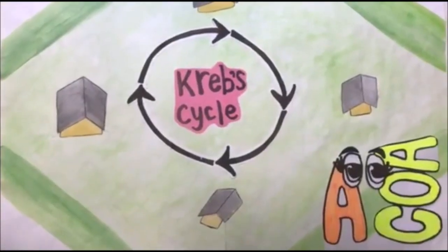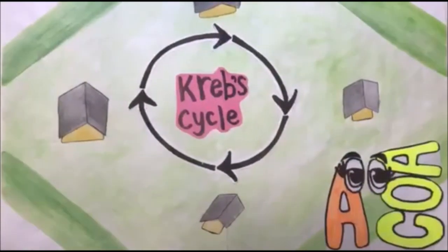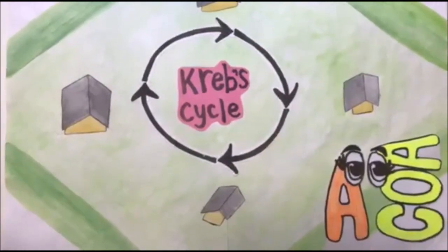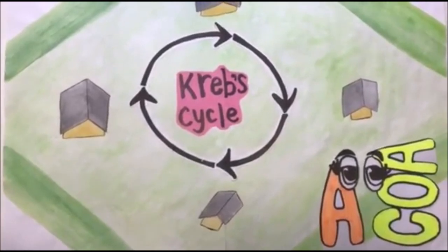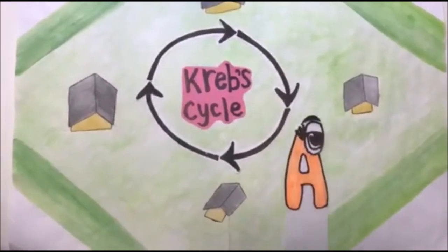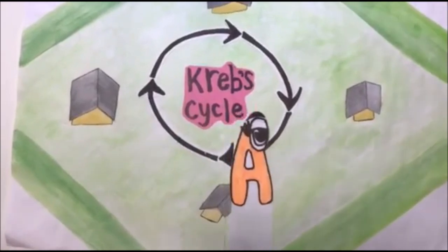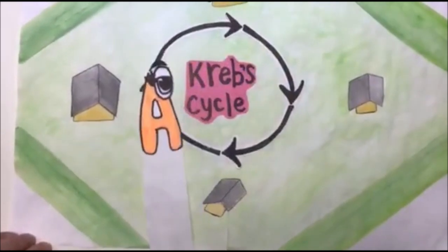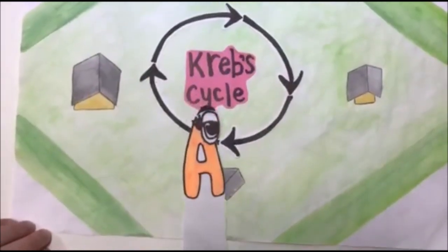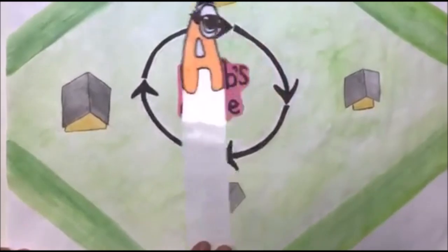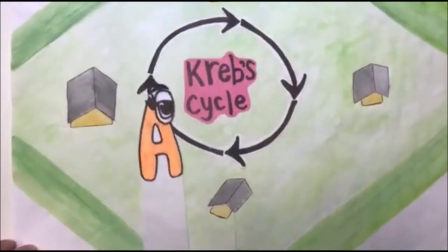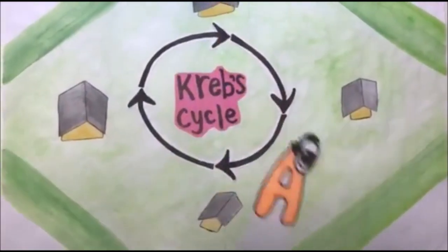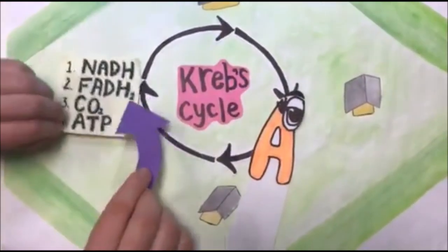Once the greetings are finished, acetyl-CoA is able to have a look at the activities on offer at the marae. Here, coenzyme A deactivates and lets acetyl immerse herself in life on the marae, such as eating, sleeping and playing. These daily routines are similar to the Krebs cycle, the second step of cellular respiration. It is a continuous cycle where products such as ATP and carbon dioxide are produced.